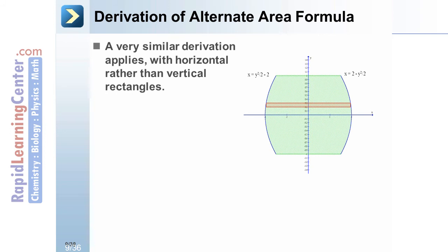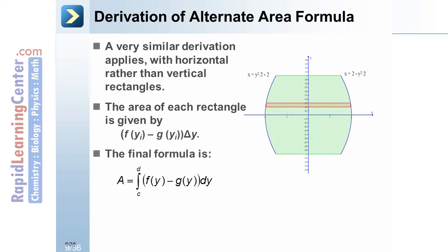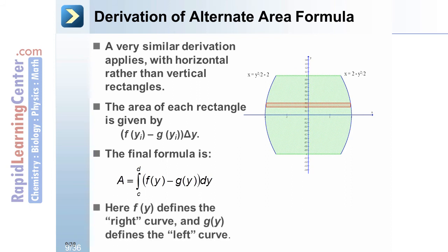A similar formula does apply with the words top and bottom replaced by right and left. A very similar derivation applies with horizontal rather than vertical rectangles. The area of each rectangle is given by [f(y_i) - g(y_i)]Δy. And the final formula is the integral from c to d of f(y) - g(y). Here, f(y) defines the right curve and g(y) defines the left curve.